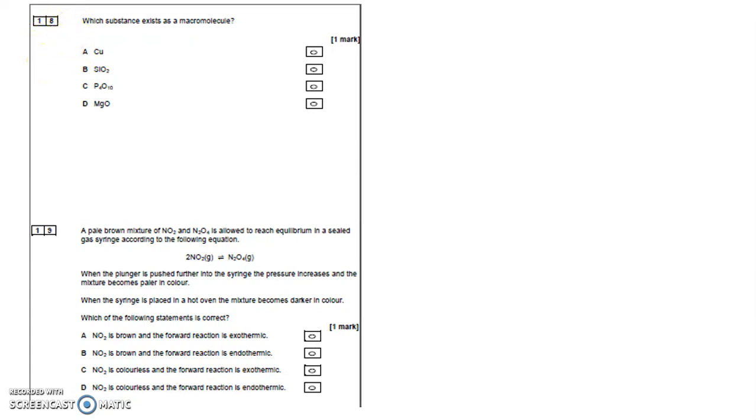SiO2 is the main constituent of sand. It's got a high melting point with many covalent bonds in a tetrahedral structure, very similar to diamond. So your answer is B.